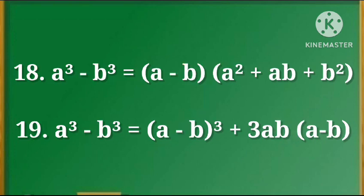18. a cube minus b cube is equal to (a minus b) into (a square plus ab plus b square). 19. a cube minus b cube is equal to (a minus b) whole cube plus 3ab into (a minus b).